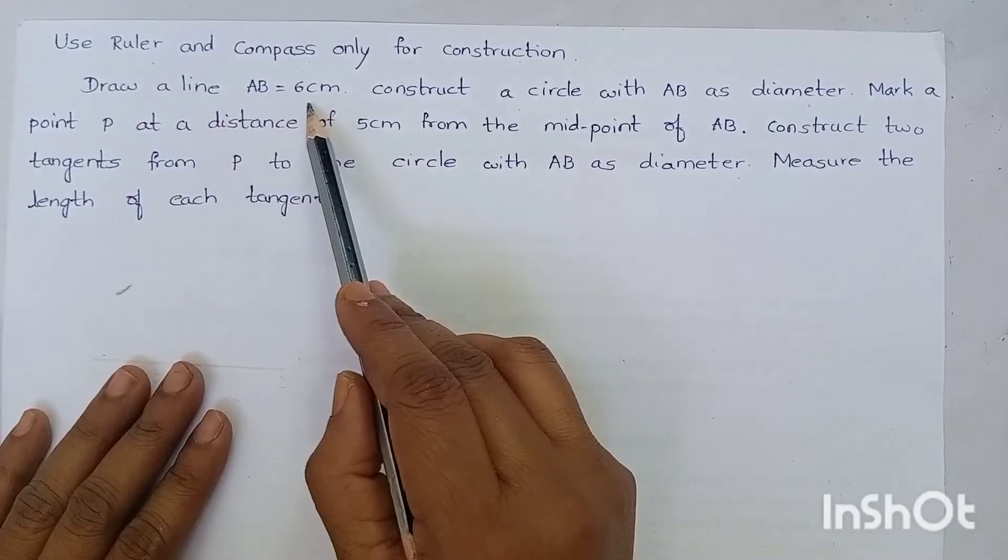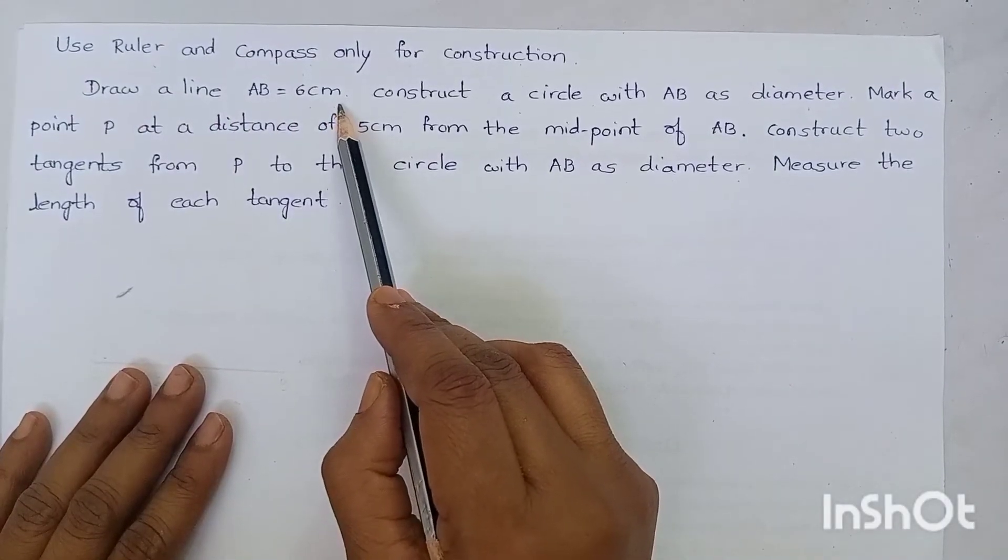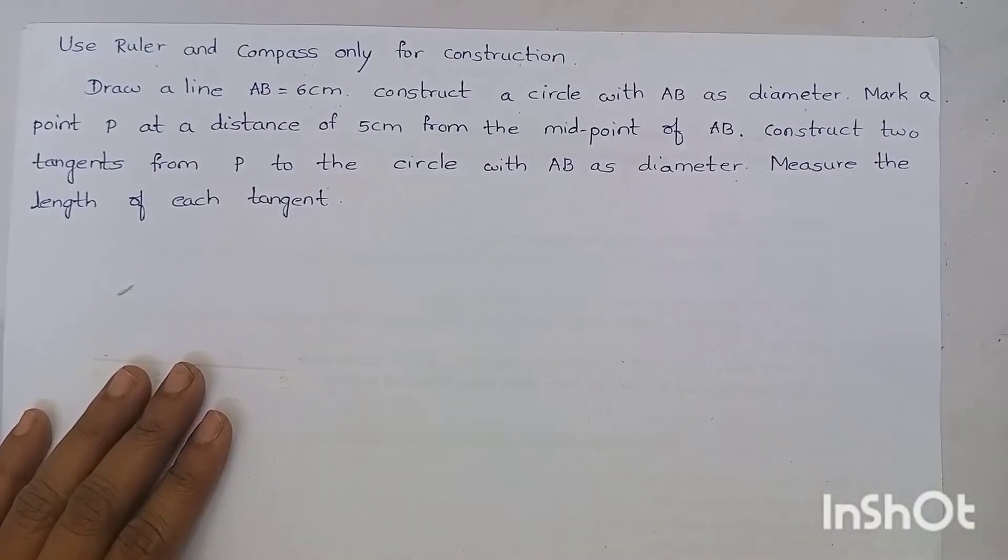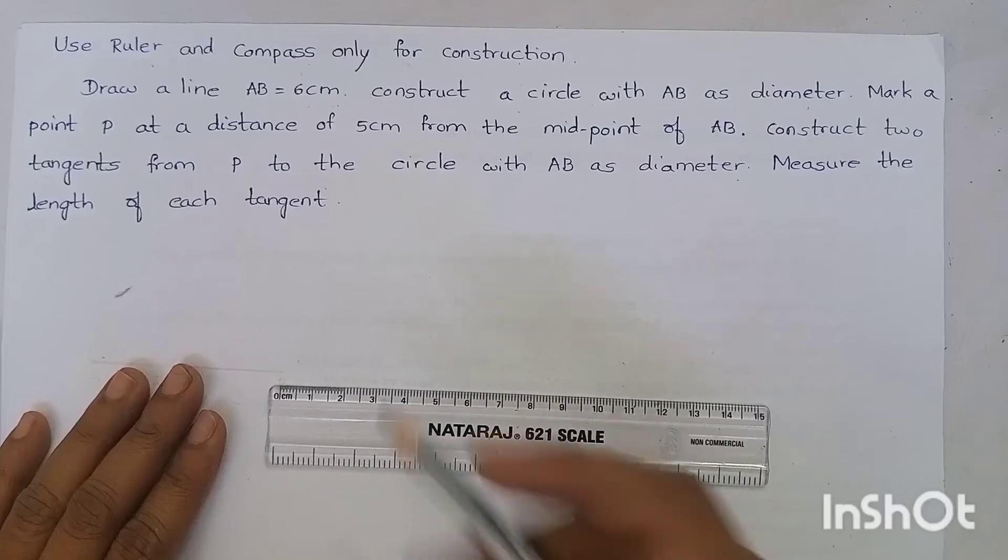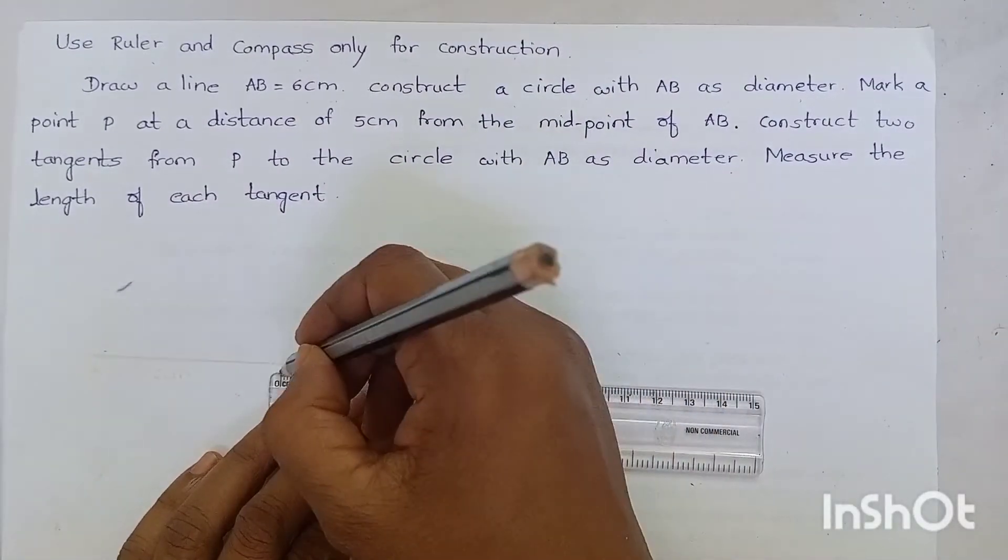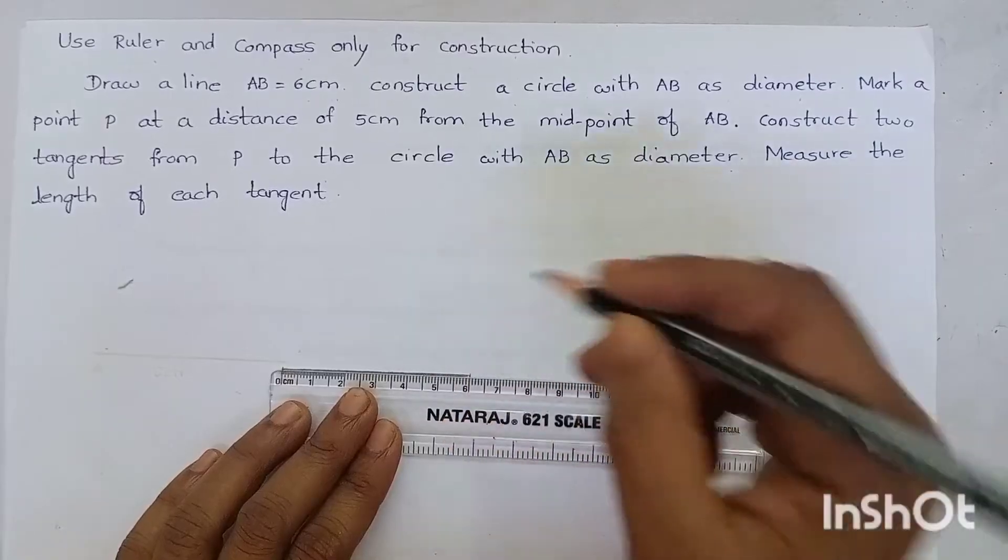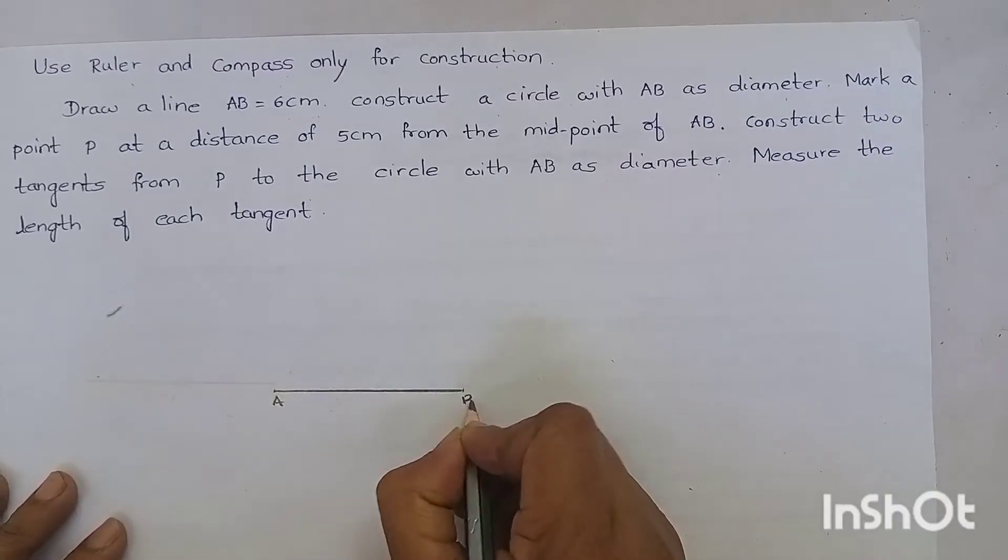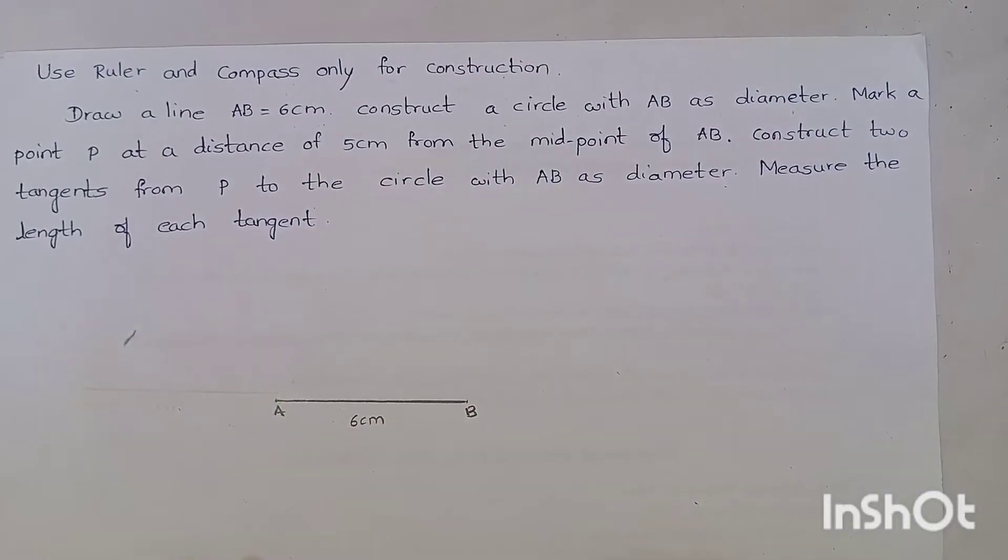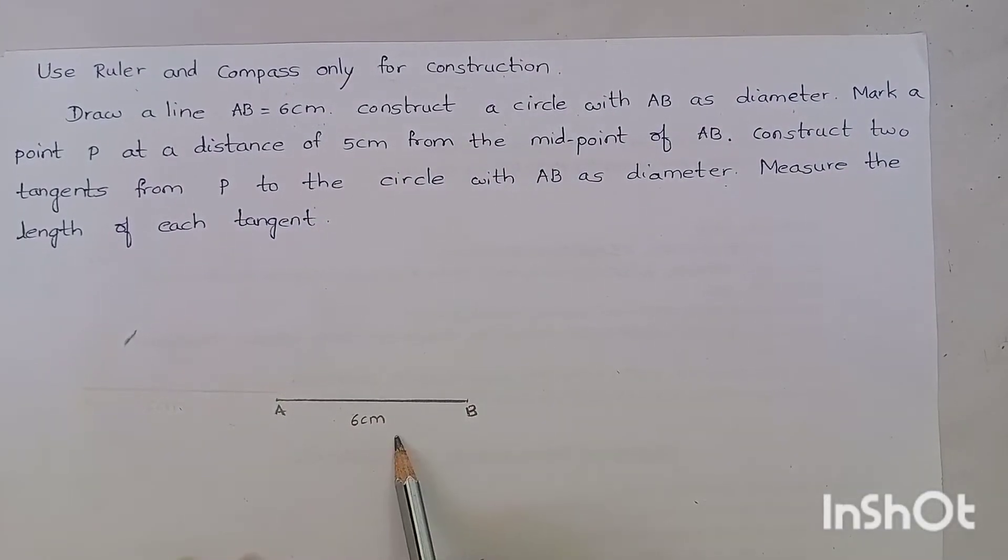Draw a line AB is equal to 6 cm. Now, let's draw a line AB is equal to 6 cm. Mark 6 cm. We have drawn a line of 6 cm.